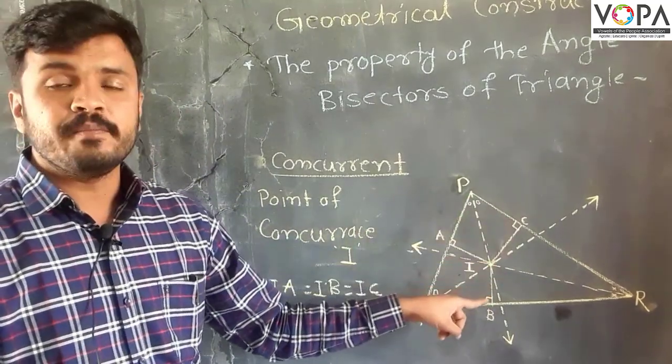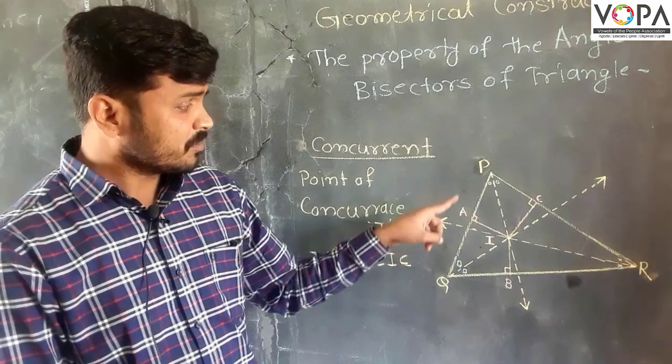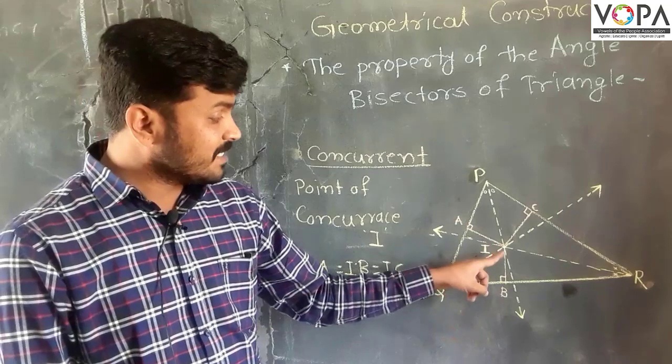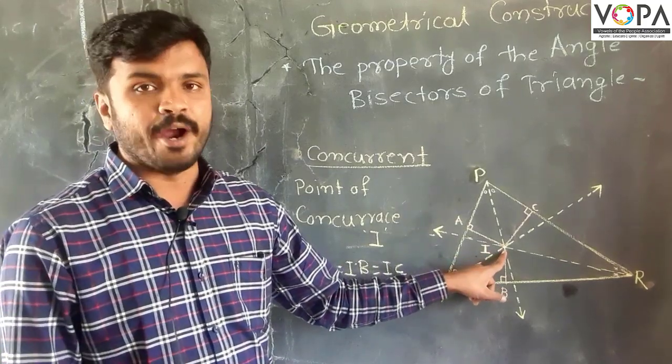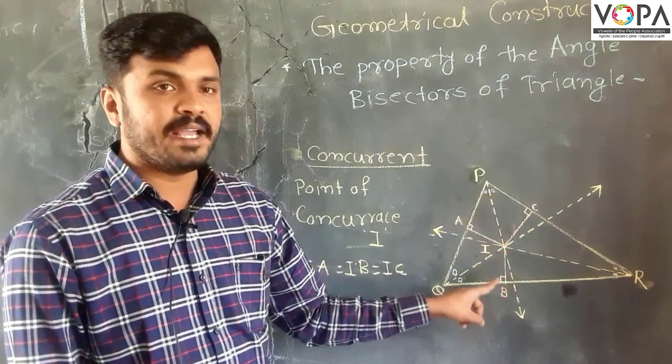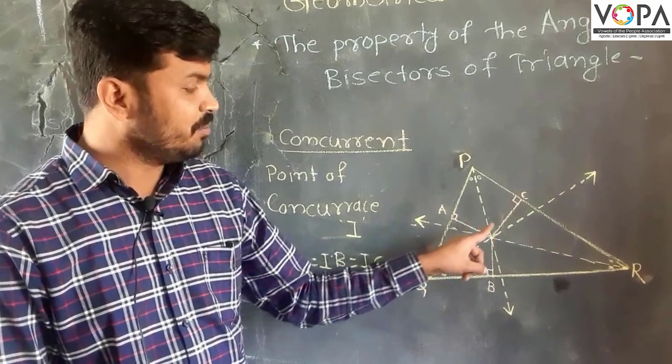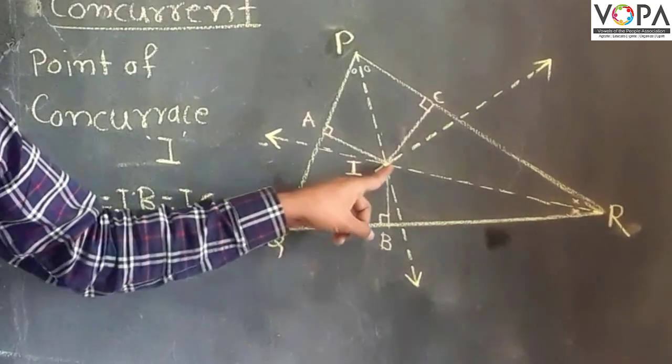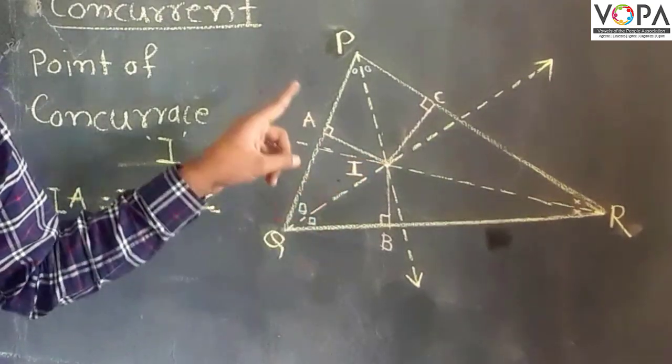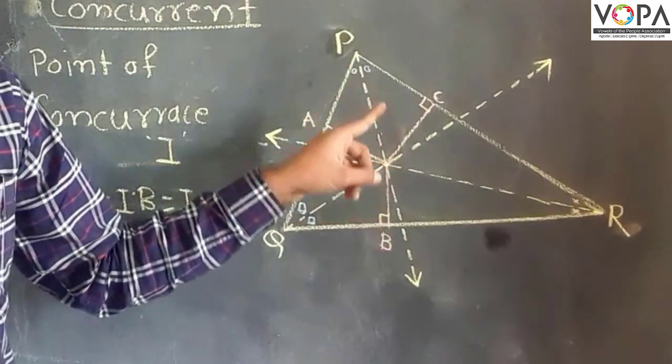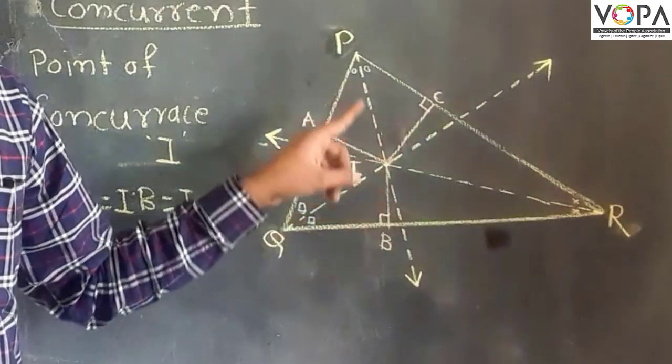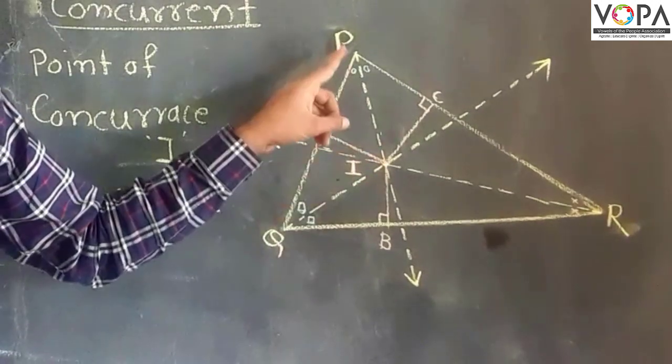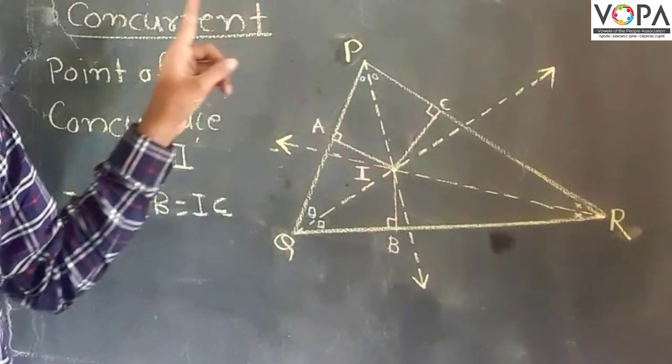After that, these angle bisectors pass through one same point. That point is I. So we can say that these angle bisectors are concurrent.